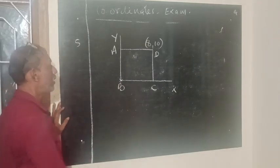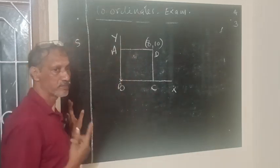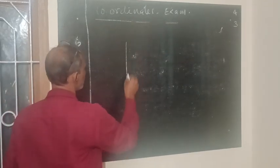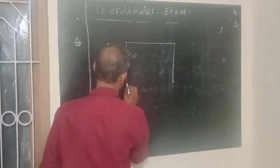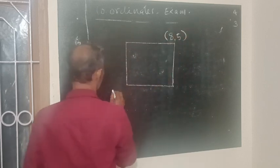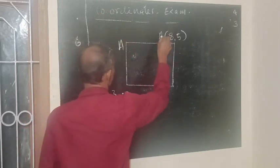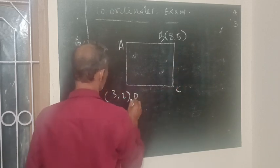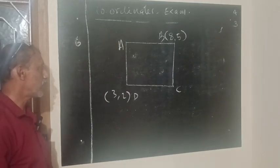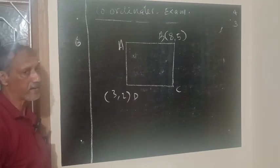Question number 5. Three marks. Find the coordinates of the points A and C, if A, B, C, D is a rectangle.